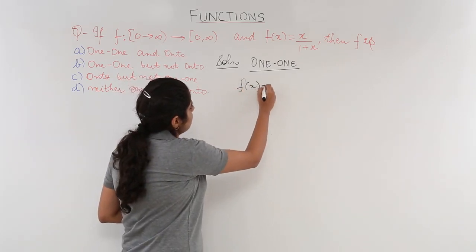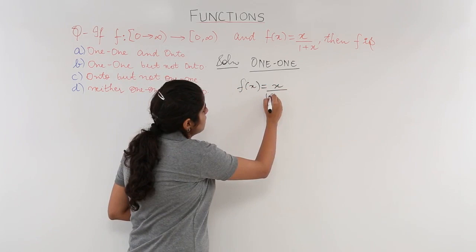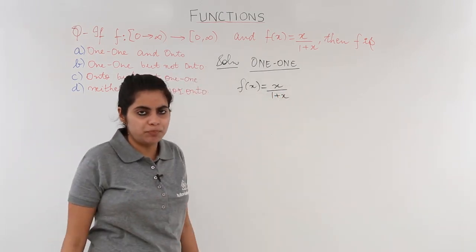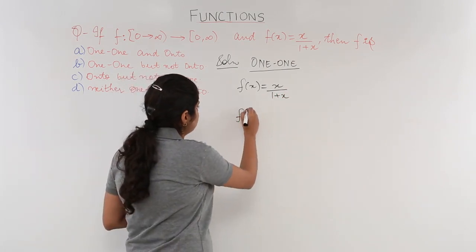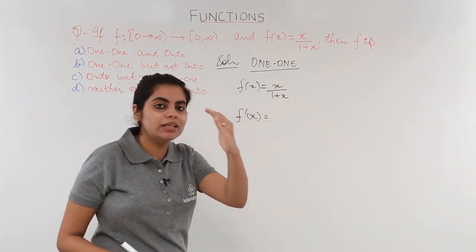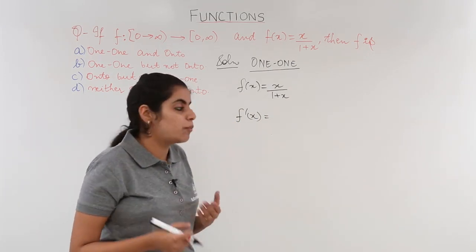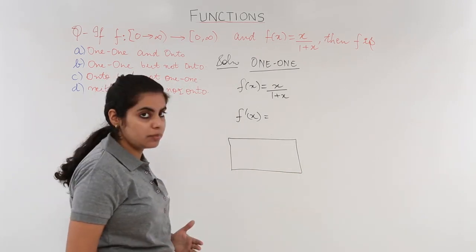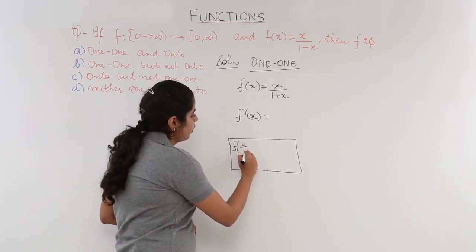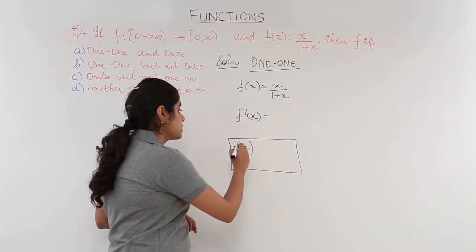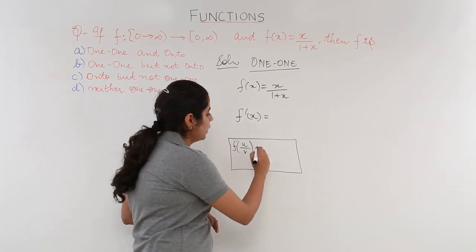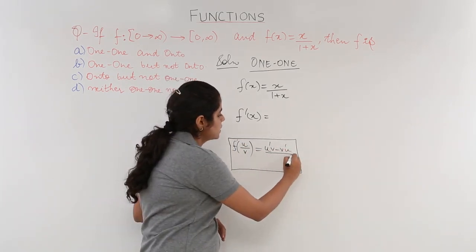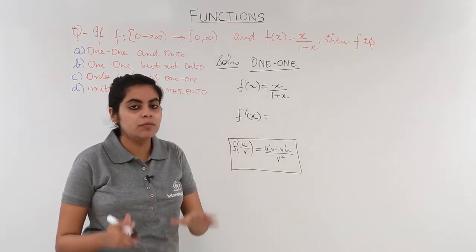The function f(x) is x upon 1 plus x, which can also be written as x upon x plus 1. We need to find the derivative f'(x). Since it is numerator upon denominator, we apply the quotient rule formula. If we have a function u upon v, the derivative is u'v minus uv' upon v squared, where u is the numerator and v is the denominator.